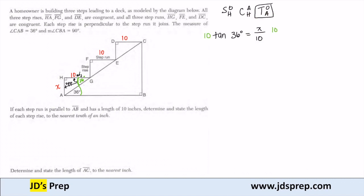Multiplying that 10 over to the other side, I get 10 times tangent of 36 degrees equals X, and when I plug that into my calculator, I get approximately 7.3 to be the length of each step rise.